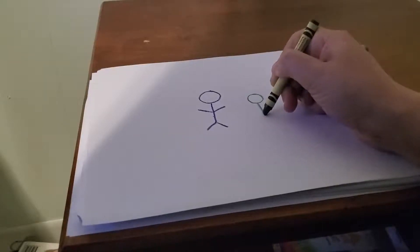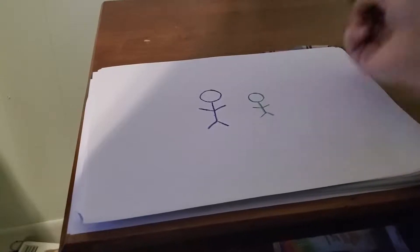And a line for his body, some little legs, and two arms too. And that's for Dorian.